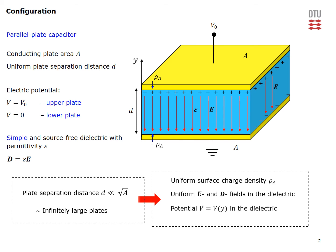If we moreover introduce a y-axis which will point from the lower to the upper plate as shown on the figure, the potential in this particular case will only be a function of the y coordinate in the dielectric material. We also assume that the fields and potentials outside of the dielectric will be equal to zero, so fringing fields and potentials are neglected in this particular case.